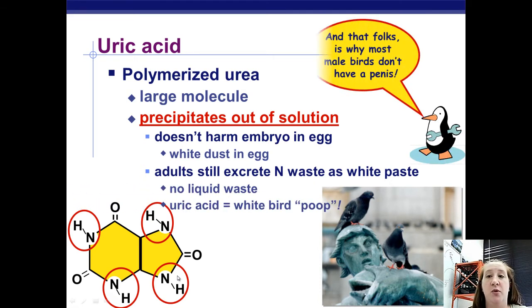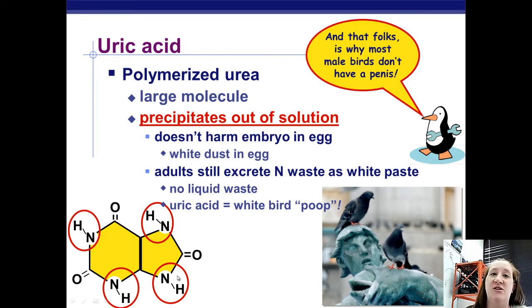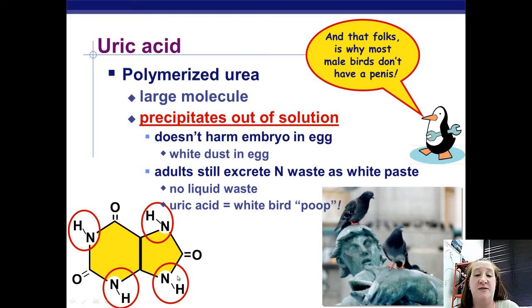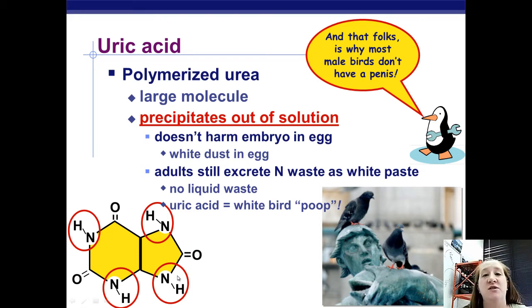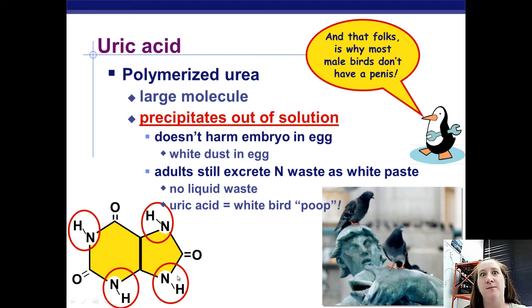Uric acid is the white component of bird poop. And that is why most male birds don't have a penis — because they don't produce liquid waste and don't need a larger structure specifically to get rid of nitrogenous waste. We'll talk about how birds still make babies later.